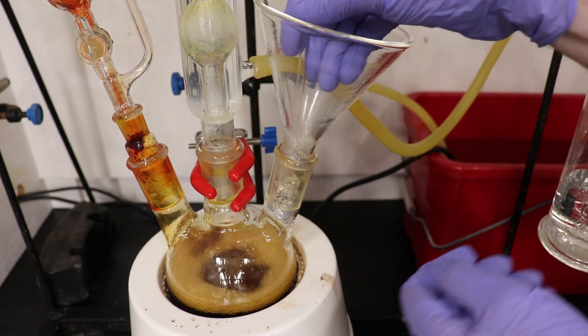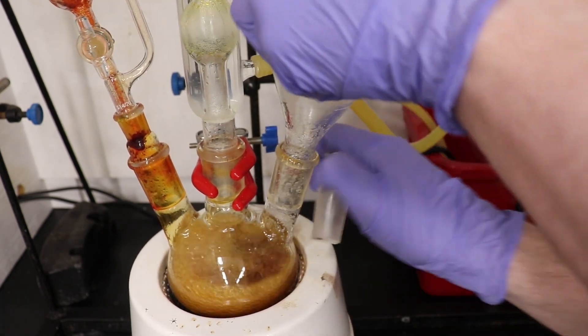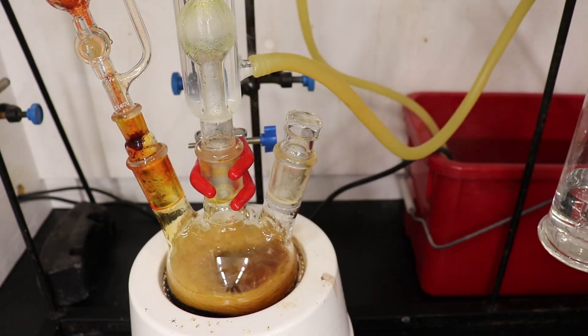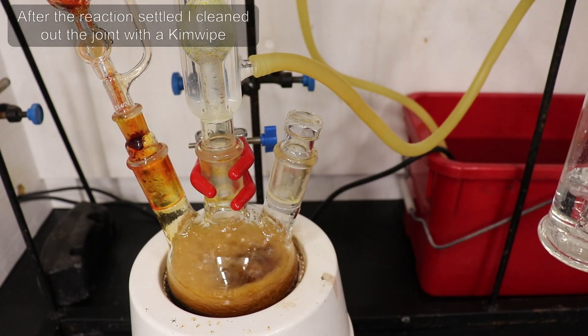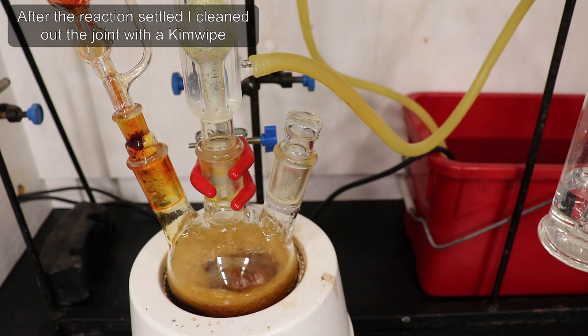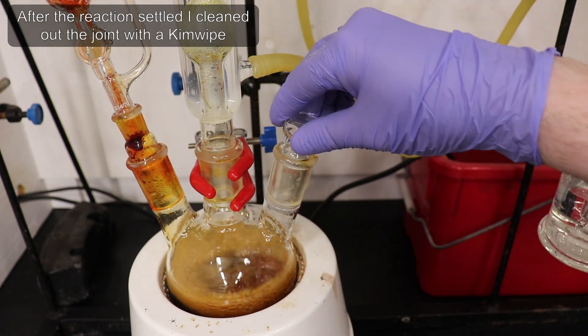However, it's a good lesson on why you shouldn't overfill your flasks, and a good learning experience. On top of that, there was also a small piece of tin stuck in the joint, which temporarily compromised the seal.